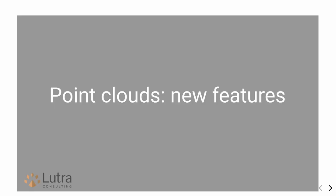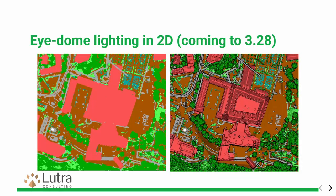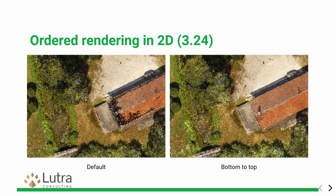Now I'd like to talk about what we have done since the last crowdfunding campaign, in the last couple of months — brand new features in the recent versions. Coming to QGIS 3.28: there is eye-dome lighting also in 2D. So if you have this top-down view, you can see much more detail, which is great.